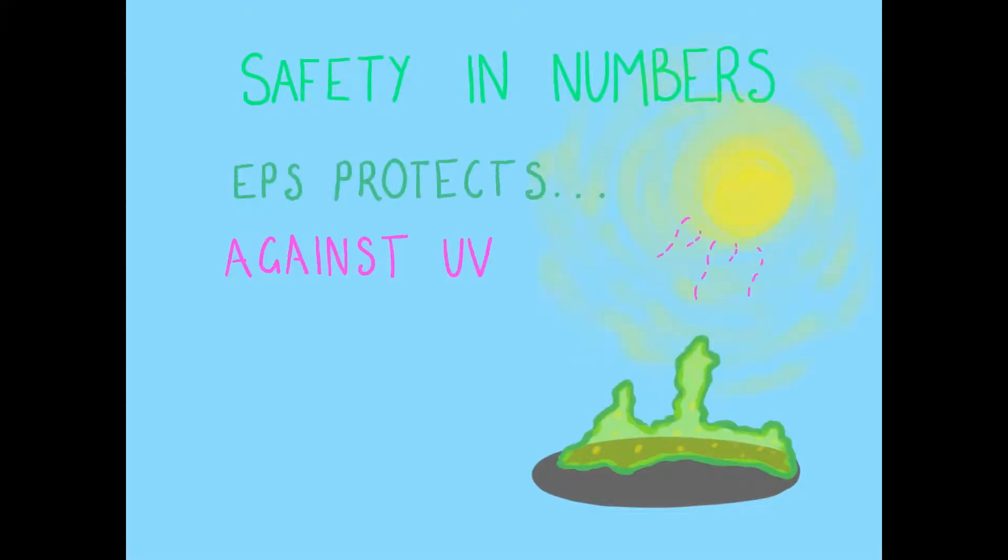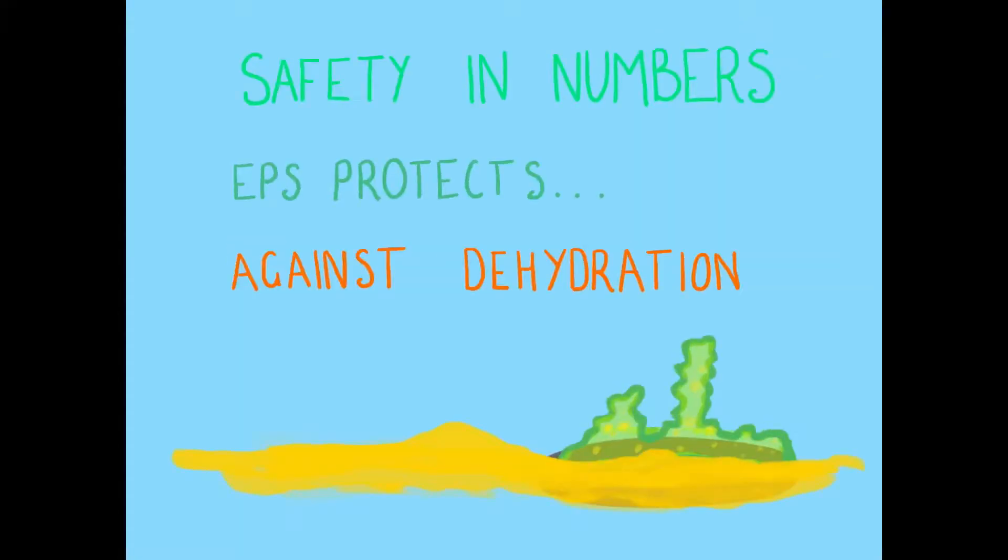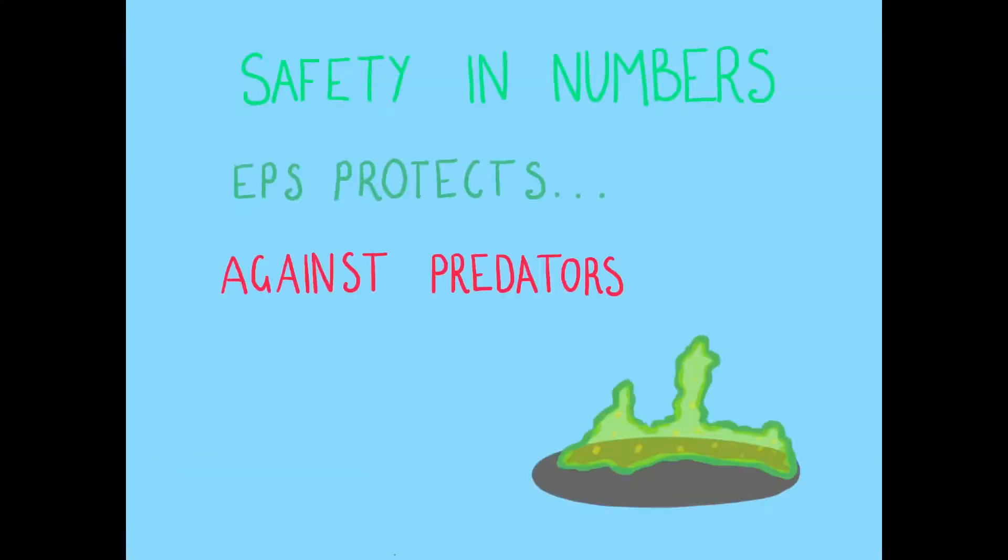But why do microbes form biofilms anyway? Simply put, there's safety in numbers. The EPS protects bacteria against harsh UV rays from the sun. The EPS also helps to protect against dehydration in the case that the biofilm is left exposed. Predators can also be deterred by microbes when a biofilm has been formed.